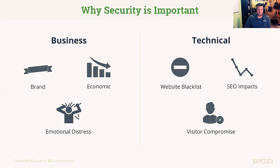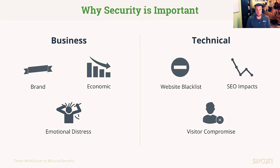So to get things started: why is security important? This slide talks about the two different types of impacts that a cybersecurity breach can have on an organization. First is the business side of things — the impact to the brand, the damage to the reputation. There's the economic impact: lost business, whether that's current or future business. There's the cost of remediation, the cost of engaging forensics, and fines that might be associated due to compliance issues.